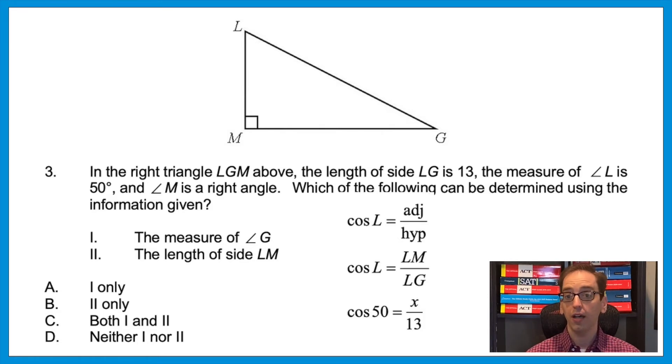So going back to SOHCAHTOA, we're going to use CAH, or the cosine is adjacent over hypotenuse. Plugging in what we have, cosine of L would be LM over LG, and then using the numbers, cosine of 50 is x over 13. And from there you could multiply out the 13 and solve for x. That would give you the value of LM. And again, I won't make you do it because who cares—they're not asking you to actually solve. They just want to know if it's possible, and it is. So both statements are true. The answer is C, both 1 and 2.